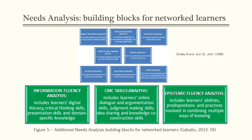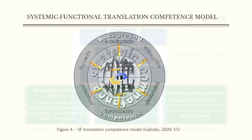The third building block is the learner's epistemic fluency — the abilities, predispositions, and practices involved in combining multiple ways of knowing, where epistemological beliefs are not fixed traits but reconfigurable mental resources. The information gathered from the needs analysis is used to define program goals. However, the definition of specific teaching objectives that also include translation can be better achieved by referring to a translation competence model.